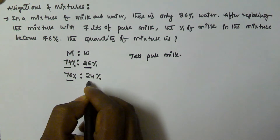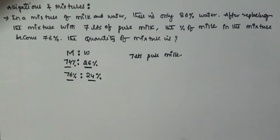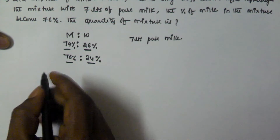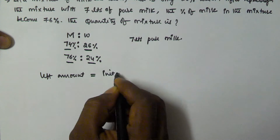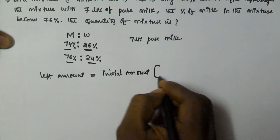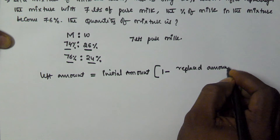We have to find the quantity of the mixture. According to the formula, the left amount is equal to the initial amount, multiplied by 1 minus the replaced amount divided by the total amount.